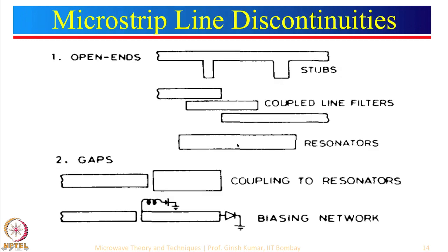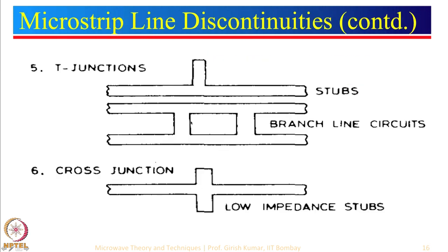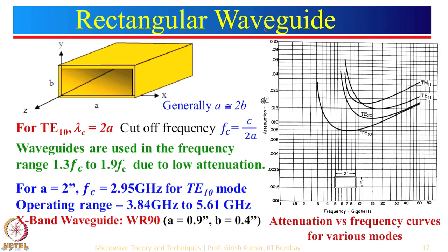We also looked at different types of microstrip discontinuities: open end, gap, step in width, right-angle bend, T-junction, and cross junction. There are many other discontinuities which we will discuss as we move along in the course, but these are the most important ones and more commonly appearing in different circuit configurations. Now let us move to rectangular waveguides. You have already been introduced to rectangular waveguides in previous lectures, but I will add a few additional practical concepts here.